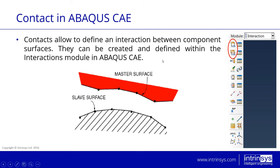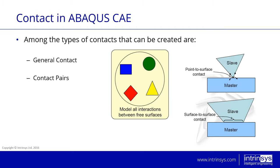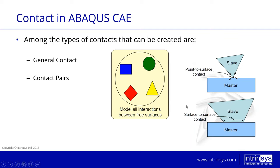Contacts allow us to define an interaction between component surfaces, and they can be created and defined within the interactions module. Usually when you go to the module interaction you can find and create the interactions. They come together with interaction properties, so you have to define a property and then define the interaction itself, which in this case would be a surface-to-surface contact, for example. It's important to talk also about master and slave — usually within contact formulations there's always a master and a slave, which we'll discuss more later.